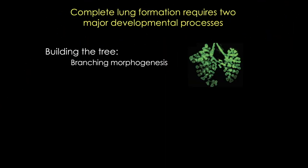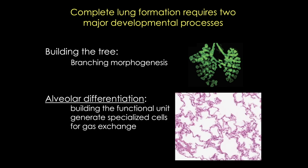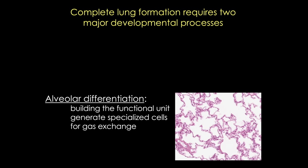To remind you, there are two major developmental processes required to complete lung formation. Building the tree, or the conducting zone, involves a process called branching morphogenesis, while alveolar differentiation — formation of the respiratory zone — involves the formation of a specialized unit for gas exchange. In this video, I'll focus on alveolar development and maturation of the lungs.